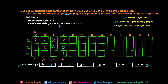Fifth step: page 0 is requested. Page 0 is already in the frames — so this is not a page fault. The pages remain: 2, 0, 1. Since 0 is repeated one more time, we increment its frequency by one. The frequency of 0 goes from 1 to 2.